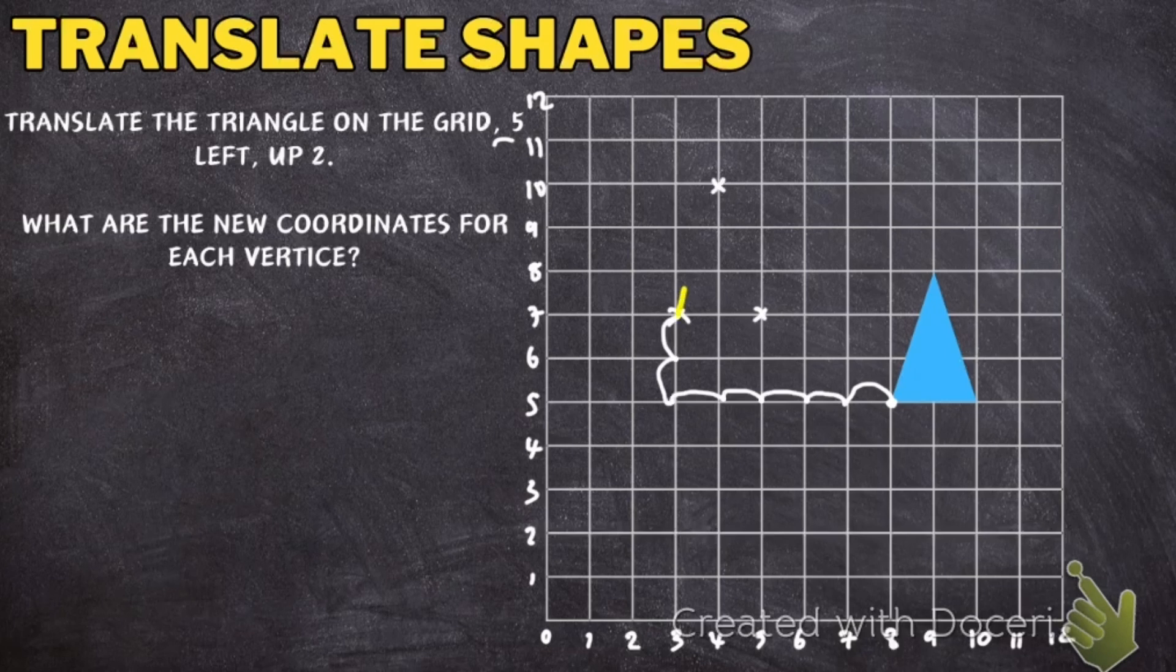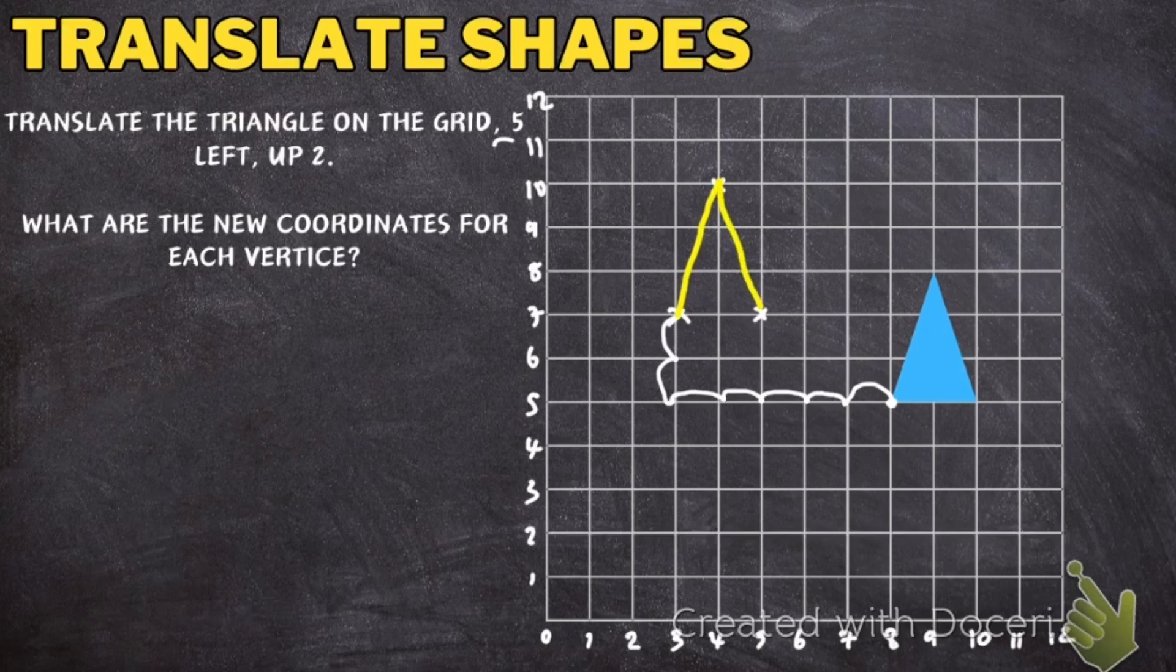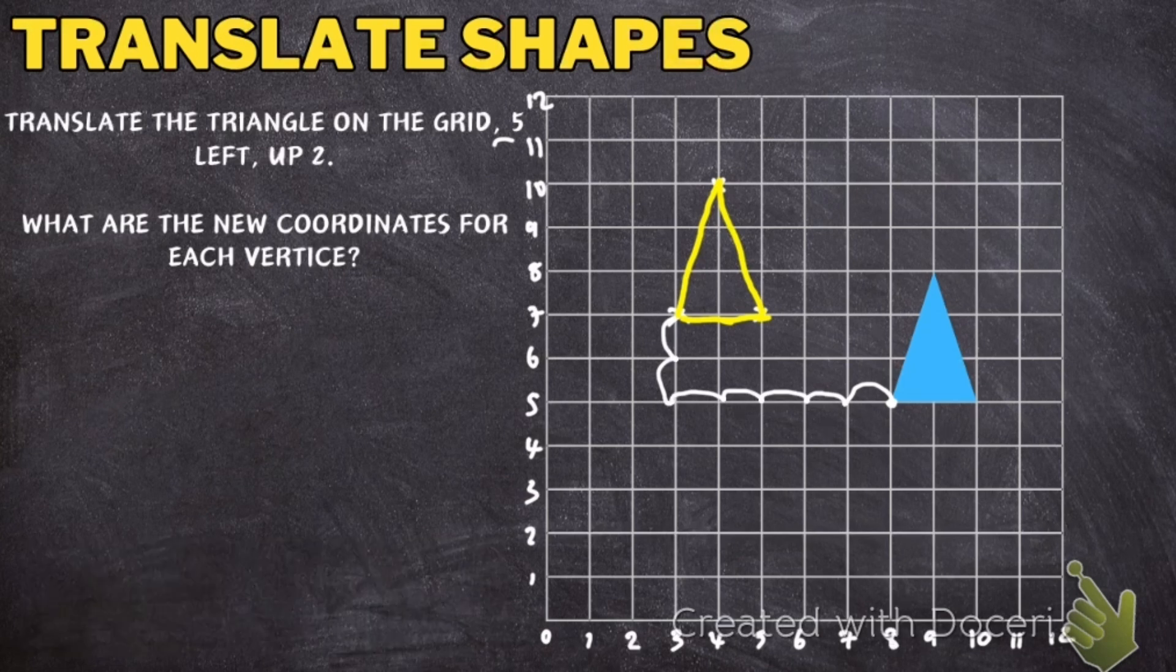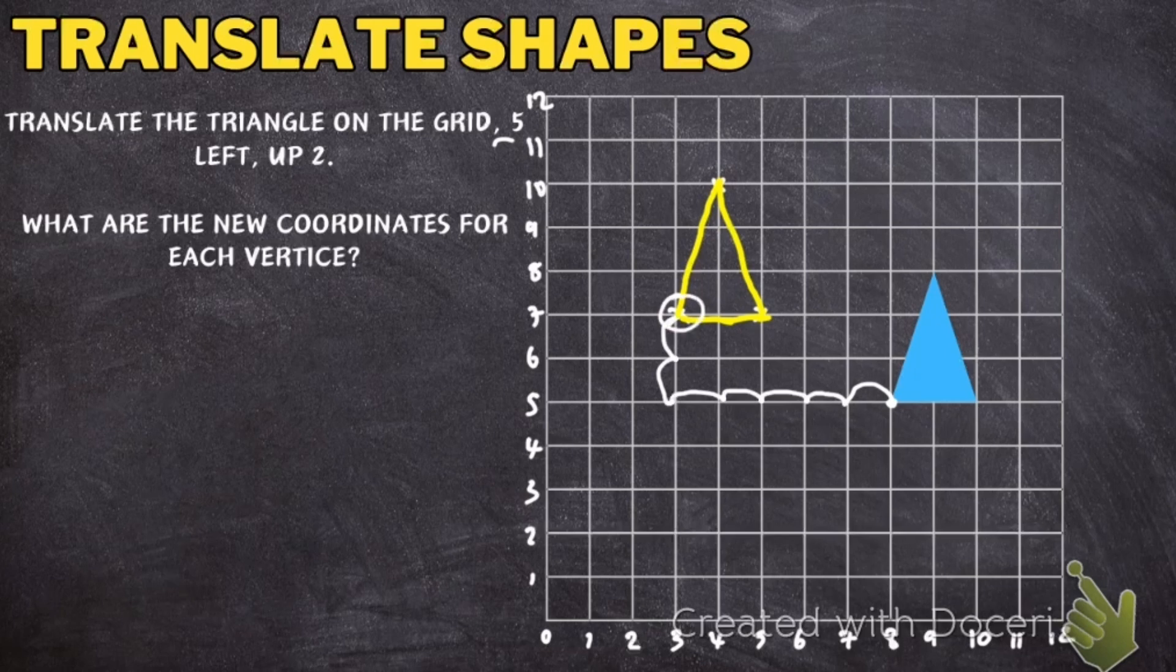So the new triangle should look something like this. And then to finish the question I must make sure I write down the coordinates. So this corner here is going to be 3, 7. So it's going to be 3, 7 because I went along to 3 and then I went up to 7.